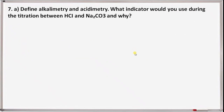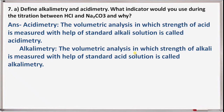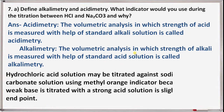Next question 7a: define alkalimetry and acidimetry, and what indicator would you use during titration between hydrochloric acid and sodium carbonate? Acidimetry is the volumetric analysis in which the strength of an acid is measured with the help of a standard alkali solution. Alkalimetry is the volumetric analysis in which the strength of an alkali is measured with a standard acid solution. Hydrochloric acid may be titrated against sodium carbonate solution using methyl orange indicator, because when a weak base is titrated with a strong acid, the solution is slightly acidic at the endpoint, making methyl orange suitable.